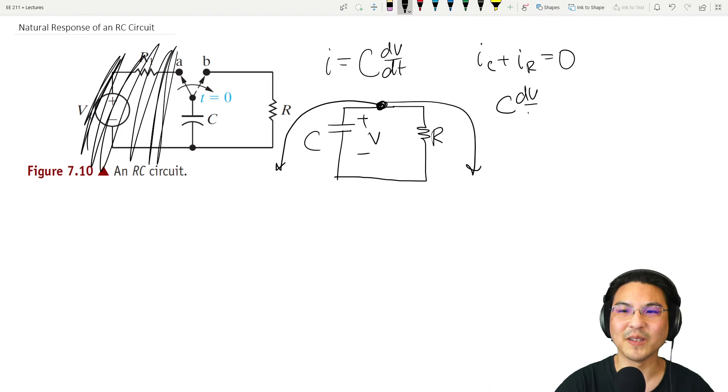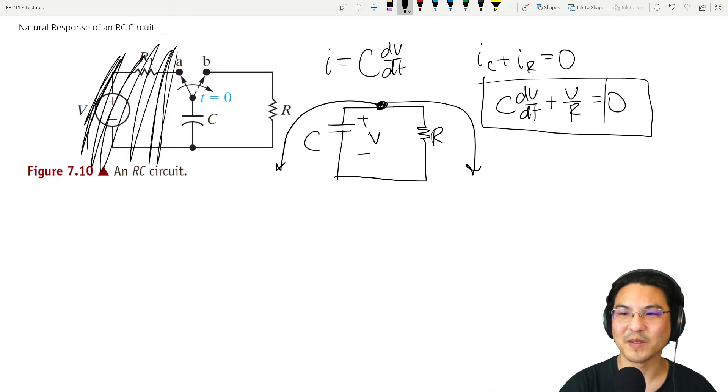And here we are again, another first order ODE. This one is homogeneous. So we have a homogeneous first order ODE with constant coefficients. How do you solve it? Separation of variables. Let's move this where we have more space.